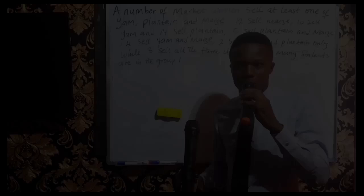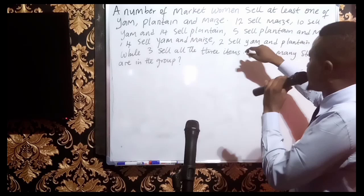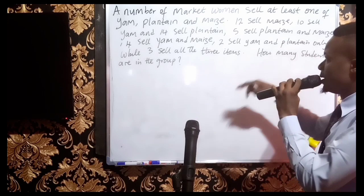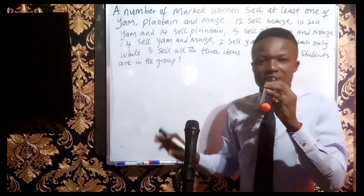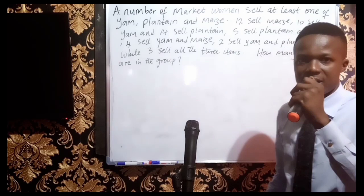Let's continue with the second question. A number of market women sell at least one of yam, plantain, and maize. 12 sell maize, 10 sell yam, and 14 sell plantain. 5 sell plantain and maize, 4 sell yam and maize, 2 sell yam and plantain only, and 3 sell all three items. How many women are in the group? This is a popular exam question — tricky but straightforward with Venn diagrams.